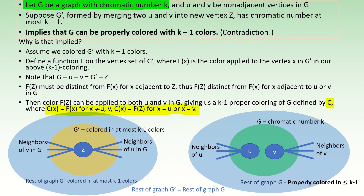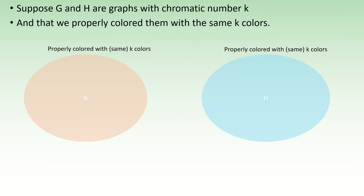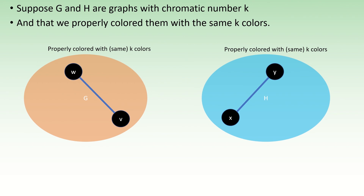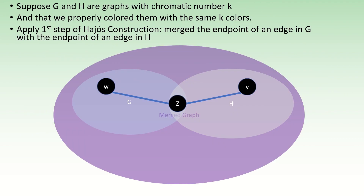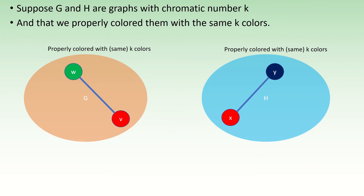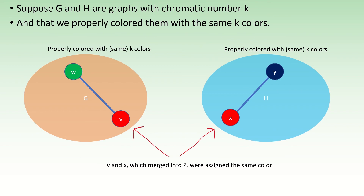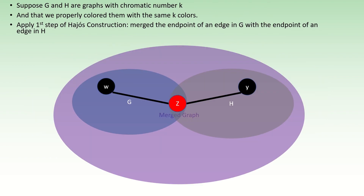Let's move on to why the Hayosh construction does not decrease chromatic number when applied to graphs with the same chromatic number. Suppose we have two graphs G and H, both with chromatic number k, and that we apply a k-coloring to these graphs. As part one of the Hayosh construction, choose two edges and merge two of their endpoint vertices. We can keep a k-coloring of this joined graph by ensuring that the color used on the two endpoints v and x in the original graph was the same, and then assigning that color to our merged vertex z.